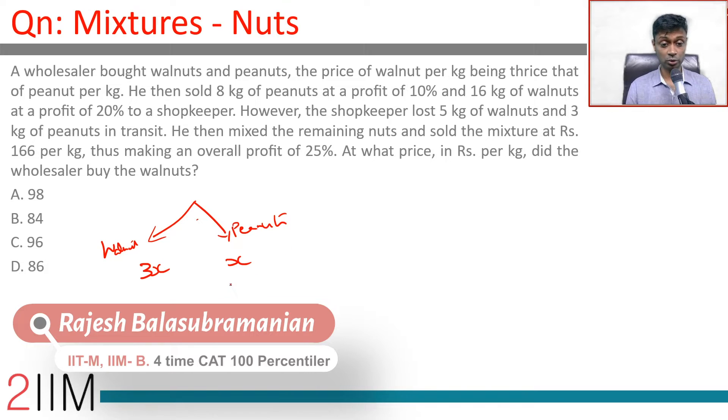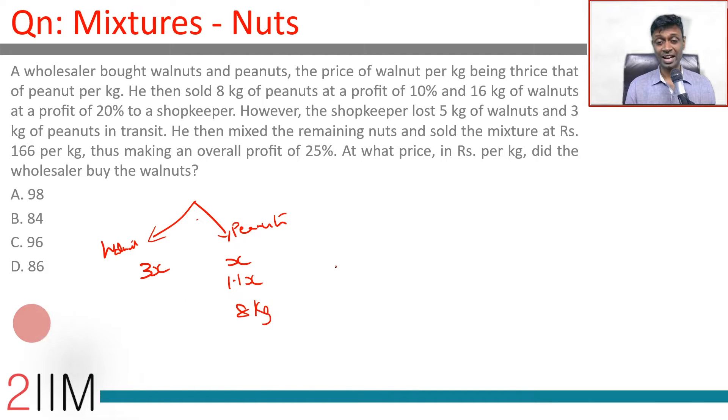at a profit of 10 percent, so he sells this at 1.1x, 8 kilograms of it, and 16 kilograms of walnut at a profit of 20 percent to a shopkeeper. From 3x, 20 percent profit, 3.6x, 16 kilogram.